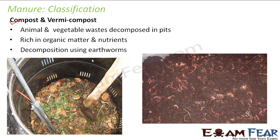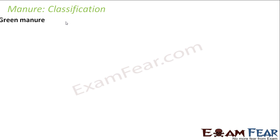By using earthworms the process becomes a little faster, because so many earthworms are placed there and the castings of all the earthworms get collected to give vermicompost. So compost and vermicompost are both formed from animal and plant wastes. In the case of compost, they are decomposed in pits; in the case of vermicompost, they are decomposed by earthworms.